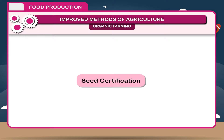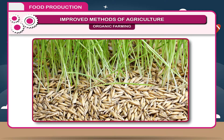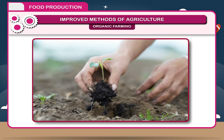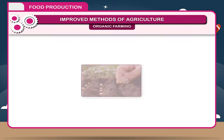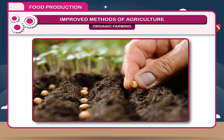Seed Certification. Seeds should be free from all contaminants. Healthy and disease-free seeds should be used for cultivation. Such seeds are called certified seeds. Seeds should be treated with some fungicides before sowing.